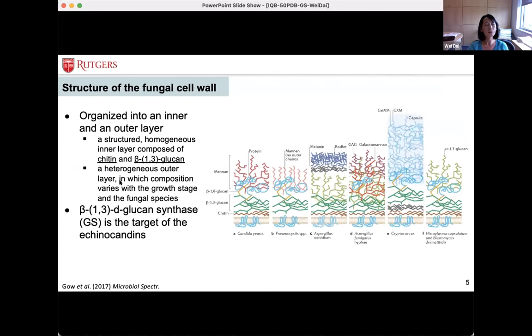Fungal cell wall is different than bacterial cell wall. They are very complex matrices of polysaccharides and proteins. They can be separated into two layers. The inner layer is more homogeneous and more conserved, composed of mostly chitin and glucan. The outer layer is more heterogeneous and the composition can vary depending on the species and the growth stage. Glucan is the most abundant structure in the inner layer. They also serve as the scaffold for attachment of the outer layer sugars and proteins. The enzyme, glucan synthase, synthesizes glucan fibers in the inner layer, and this enzyme is the target of the echinocandin drugs.